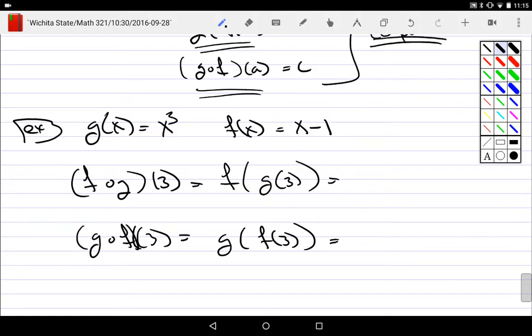What's G of 3? 3. What's 3 cubed? 27. And then so that would be F of 27, which is 26. This is G of, what's F of 3? 2. And then what's G of 2? 8. Completely different things. Is composition commutative? Pretty obviously not.